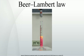Beer–Lambert law. In optics, the Beer–Lambert law, also known as Beer's law, the Lambert–Beer law, or the Beer–Lambert–Bouguer law, relates the absorption of light to the properties of the material through which the light is traveling.